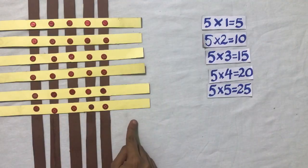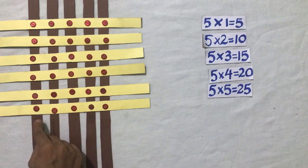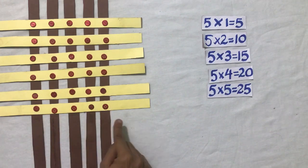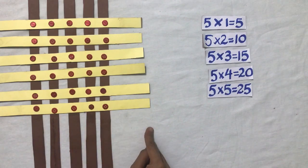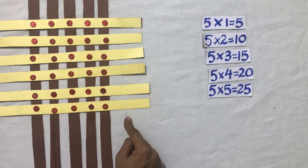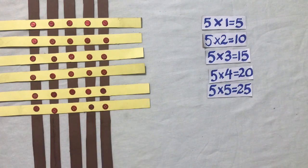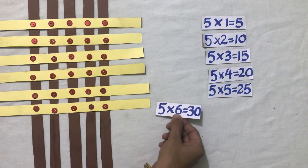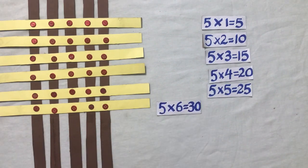I have placed one more horizontal strip with five intersecting points. Now the number of intersecting points increases to thirty, which means five sixes are thirty.